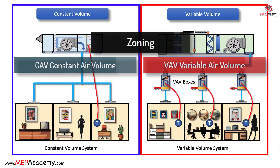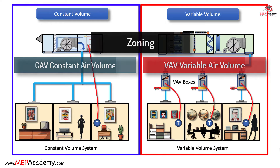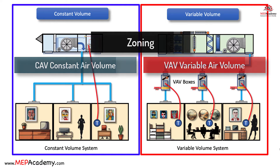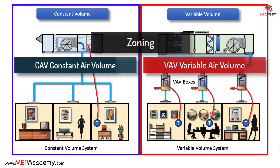VAV vs. Constant Volume: Zoning Differences. Efficient zoning can make a world of difference in terms of energy consumption, comfort, and cost savings. When comparing variable air volume (VAV) systems to constant volume systems, it's essential to understand the significant zoning differences between these two approaches. In this video, we'll delve into the nuances of zoning in a VAV and constant volume system and how they impact a building's HVAC performance.